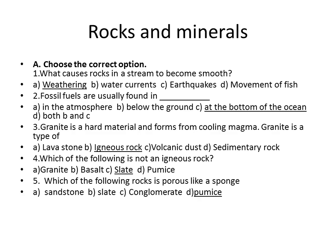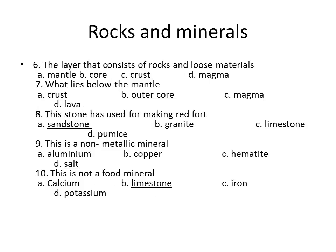Question five: which of the following rock is porous like a sponge? Porous means it is pumice. Underline the option: pumice. Question six: the layer that contains rocks and loose material is called the crust. Underline: crust.